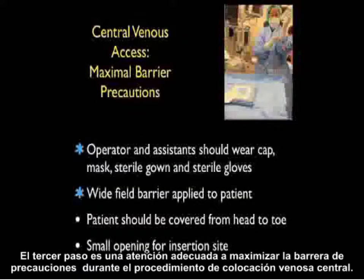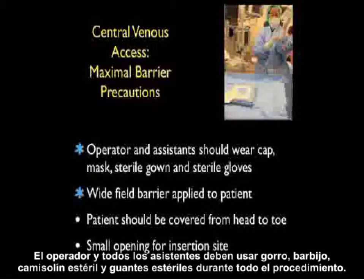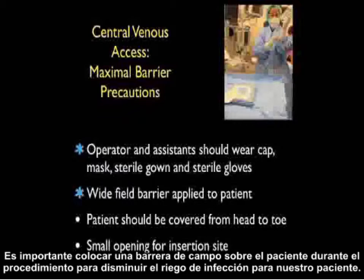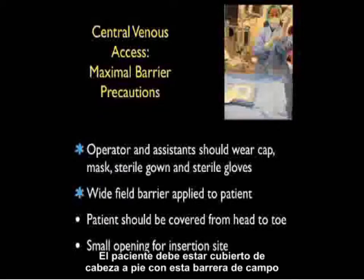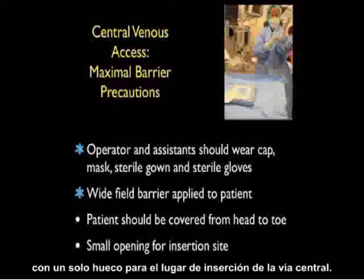The third step is adequate attention to maximal barrier precautions during the central venous placement procedure. The operator and all assistants should wear a cap, mask, sterile gown, and sterile gloves throughout the procedure. It is important to place a wide field barrier over the patient during the procedure to decrease the infectious risk, covering the patient from head to toe with only a small opening for the insertion site of the central line.